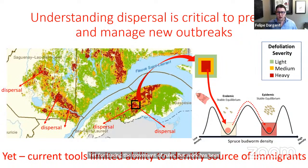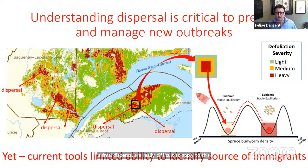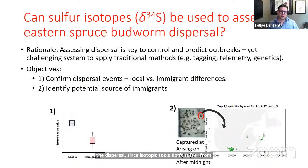Tracing the movement of spruce budworm has been incredibly challenging. Traditional methods to monitor animal dispersal are really difficult to apply to this system, because there is substantial gene flow so molecular tools don't work, and these insects are too small and too numerous to use radio tags or mark-recapture effectively. We believe instead that we could use isotopes to track dispersal, since isotopic tools don't suffer from these limitations.